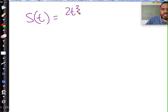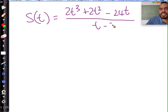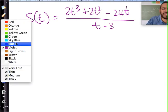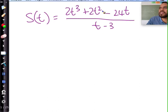2t cubed plus 2t squared, 24t all over t minus 3. Guys, what can you do with the top first? You need to make this friendly. Look at this. What can you do with the top first? Say 2 times 3.